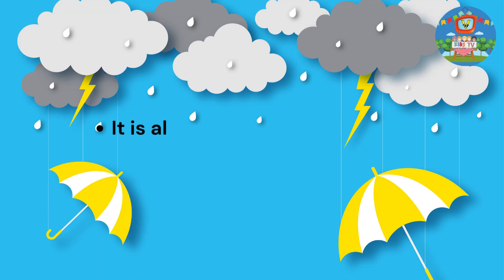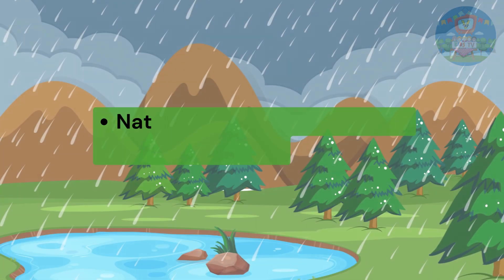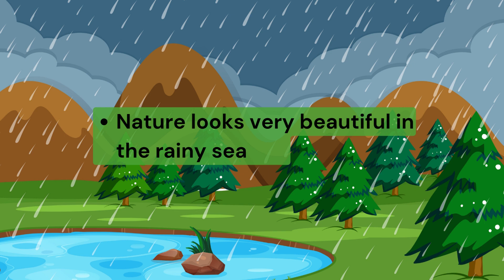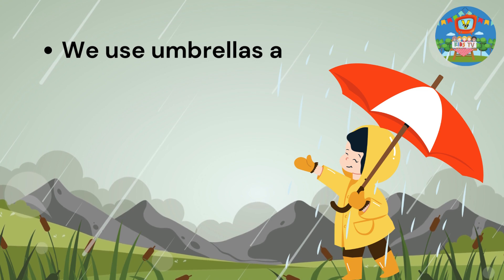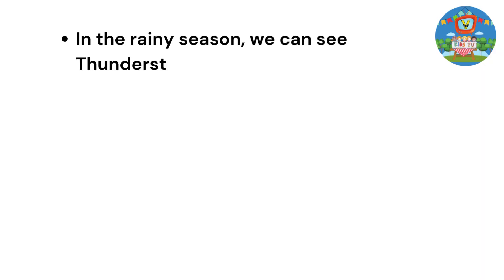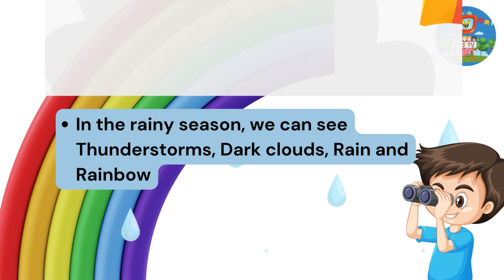Rainy Season. The rainy season is also called Monsoon Season. Nature looks very beautiful in the rainy season. We use umbrellas and raincoats to go out. In the rainy season, we can see thunderstorms, dark clouds, rain, and rainbow.